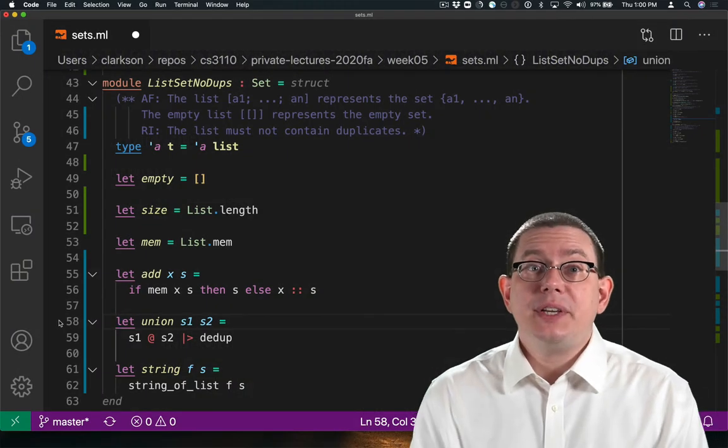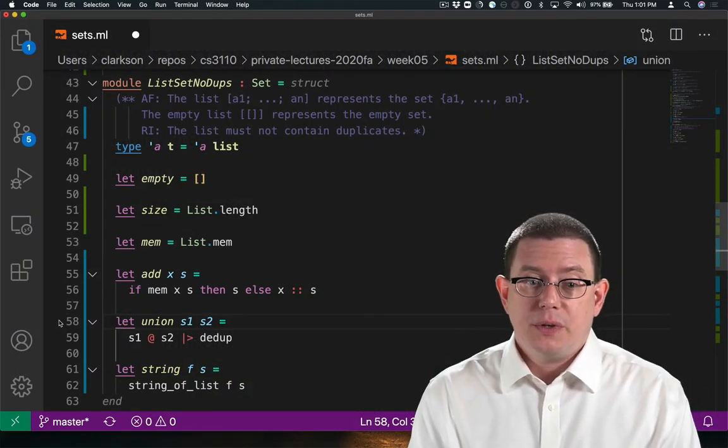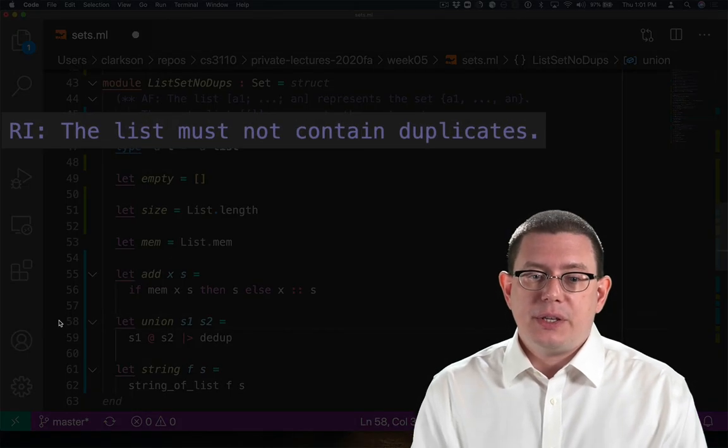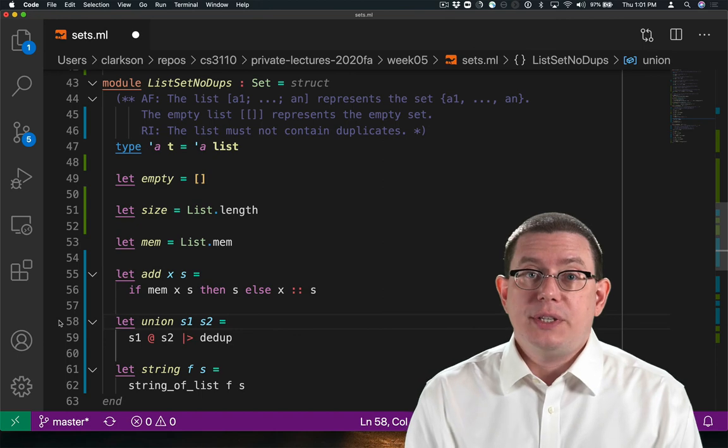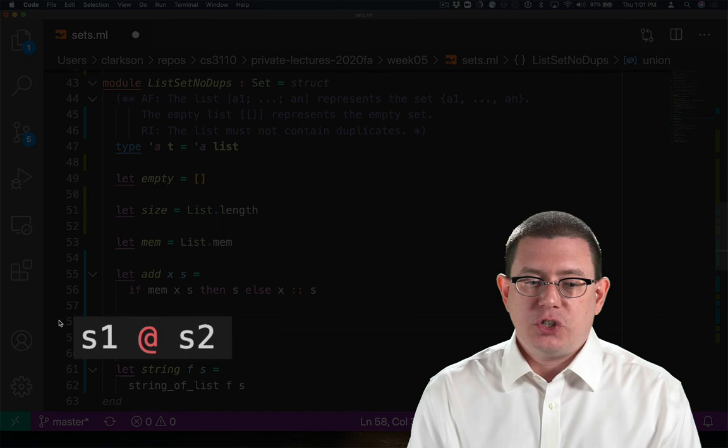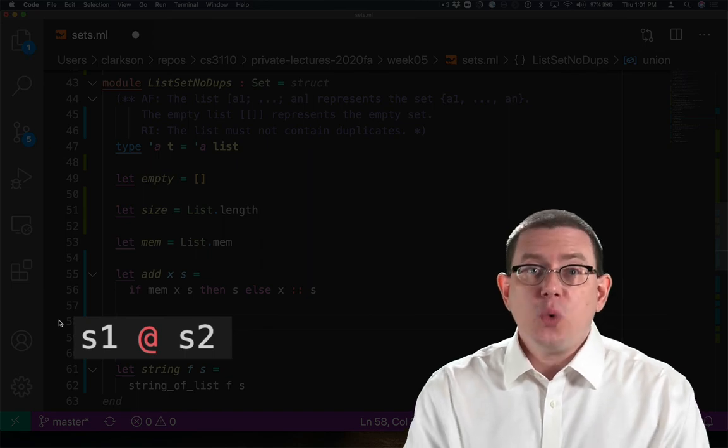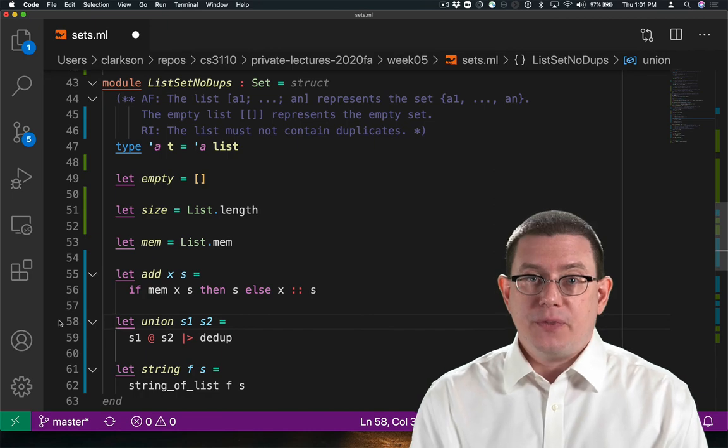A great example of this is in our implementation of union inside of list set no dupes. The rep invariant here says that the list must not contain duplicates, but we do temporarily construct a list that contains duplicates, or might contain duplicates, when we take S1 append S2. We restore that invariant, though, by deduplicating before we return from the function.